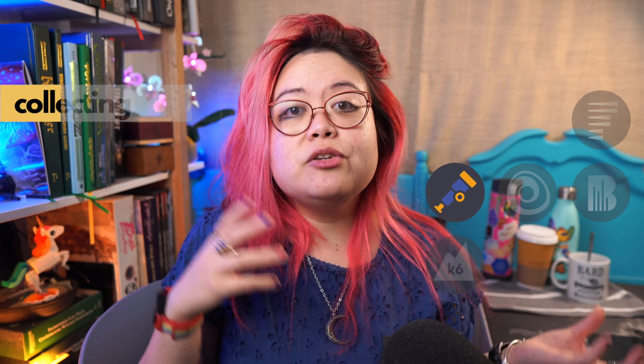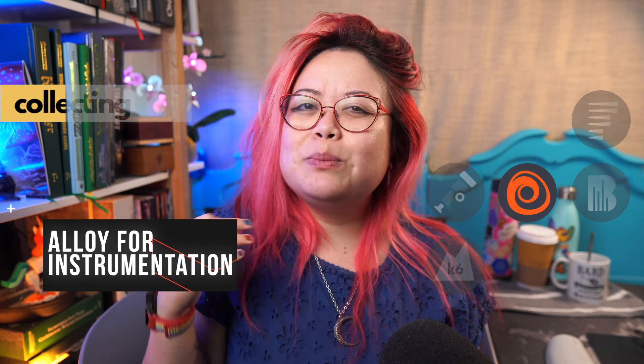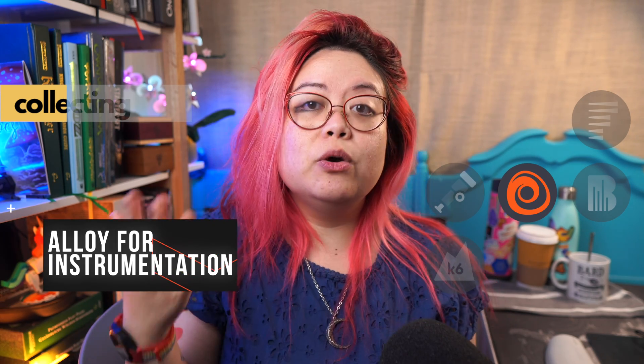We talked about OpenTelemetry earlier — there is an OpenTelemetry collector that is an agent that does this. However, we also have something called Grafana Alloy, which is kind of like an opinionated version of the OpenTelemetry collector that happens to work well with the rest of the Grafana stack. So it's a telemetry collector for Mimir or Prometheus for metrics, Loki for logs, Tempo for traces, Pyroscope for continuous profiles, and other OpenTelemetry endpoints.